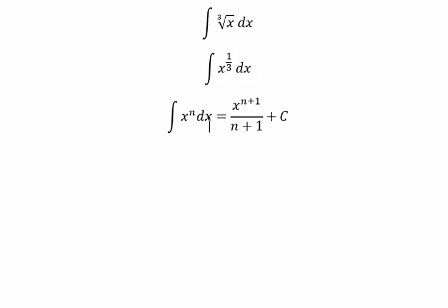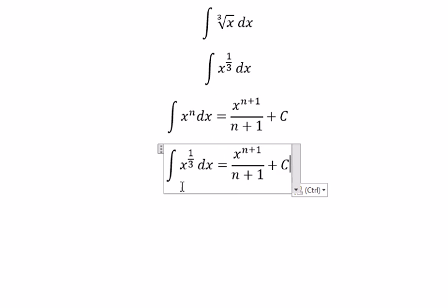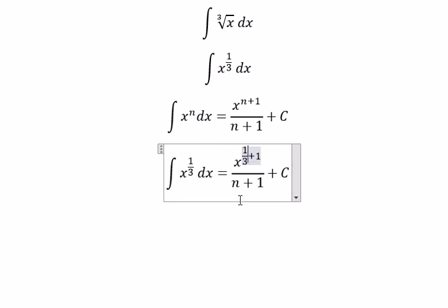In this situation, we can apply the formula. So n equals 1 over 3, and we get 4 over 3 as the new exponent.